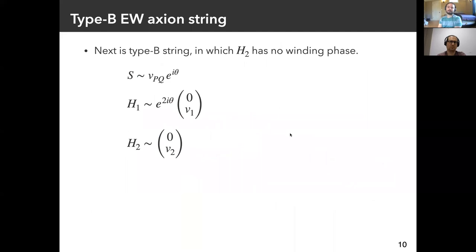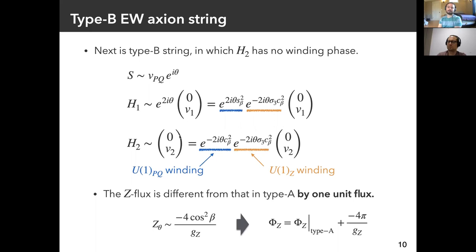Next is the type B string, in which H2 has no winding phase. S is the same as the previous case, and H1 is also the same, but H2 has no winding phase. Again, we can decompose these windings into two parts — one for the U(1) Peccei-Quinn symmetry and the orange parts for the U(1)_Z symmetry. However, the winding number for the U(1)_Z symmetry is different from that in the type A string. The Z flux again appears around the string, but differs from that in type A by one unit flux.